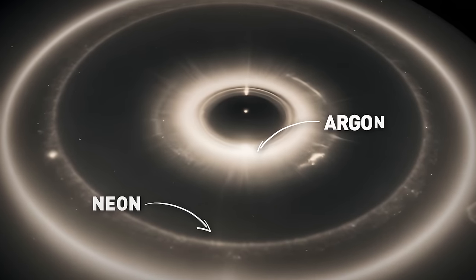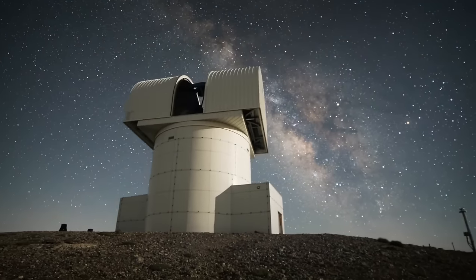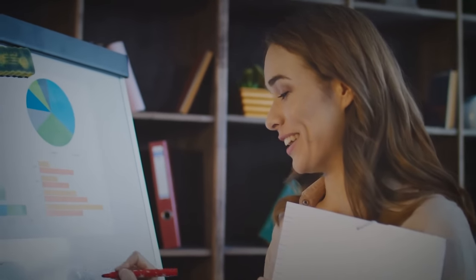Along with neon, the team found argon. It has been seen in several protoplanetary disks before, but its traces have never been this strong. Some senior researchers thought it wouldn't be possible to see them so clearly.